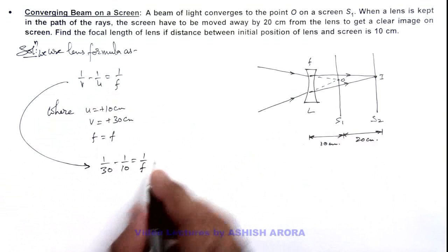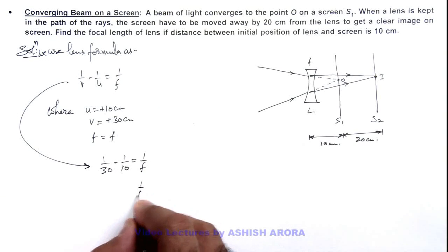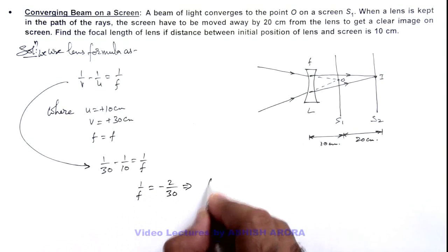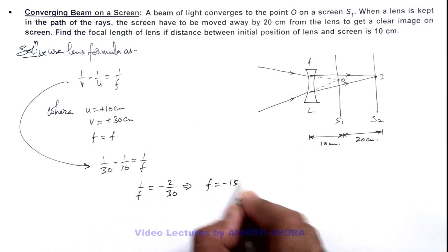On simplifying, this gives us 1/f = -2/30, which implies the focal length is minus 15 centimeters.